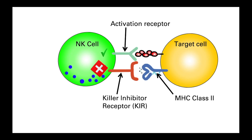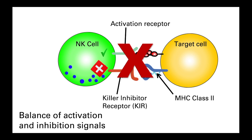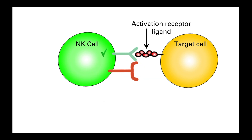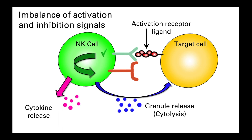Natural killer cells express a group of receptors called killer inhibitory receptors, or KIRs, that enable them to recognise damaged cells through receptor-coreceptor interactions. They receive activation and inhibition signals, and it is the balance of these signals that ultimately determines the cell's fate. If the inhibitory signals are equal to or outweigh the activation signals, then nothing happens and the NK cell will detach and go on its way. If, however, the inhibitory signals are lost — which often happens during viral infections as the virus tries to hide within a cell, or when our own cell becomes cancerous — then the NK cells become activated, releasing cytokines and a granule protein called perforin onto the infected cell. As the name suggests, this perforates or punches holes into the cell membrane, resulting in cell lysis.